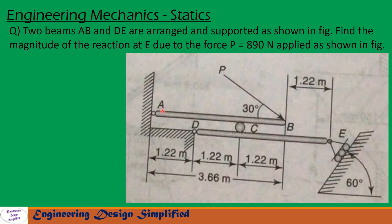In this problem, given is two beams AB and DE are arranged like this and a load P at 30 degrees to the horizontal is applied here at this end B, and the load P is 890 Newtons. Due to this load, we need to find the magnitude and direction of reaction at E, and all the dimensions are as shown in figure. Let's see in the coming slides how to solve this problem.